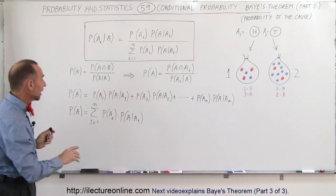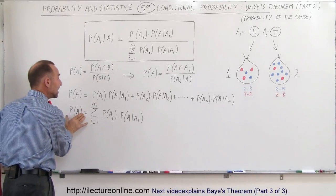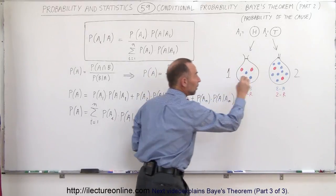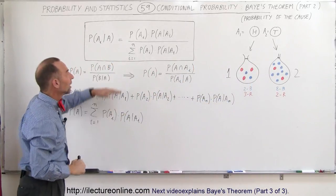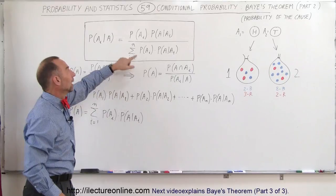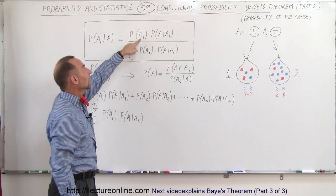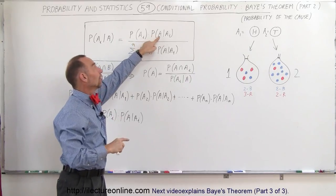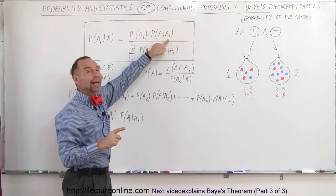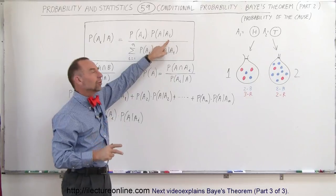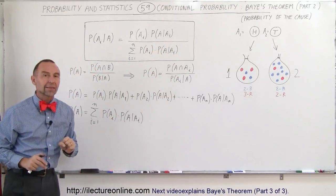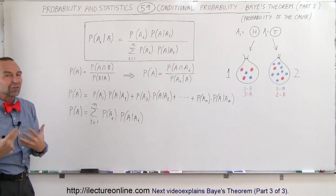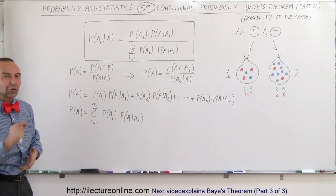At this point, you should already recognize that the probability of A — the probability of either pulling a red marble or a blue marble out of one of those two bags — is the denominator in Bayes' Theorem. And the numerator is the probability of either throwing heads or tails times the probability of pulling a blue marble, provided that you threw either heads or tails. That's how you want to look at the theorem. We'll slowly unravel the mystery of Bayes' Theorem in one or two more videos, so stay tuned.